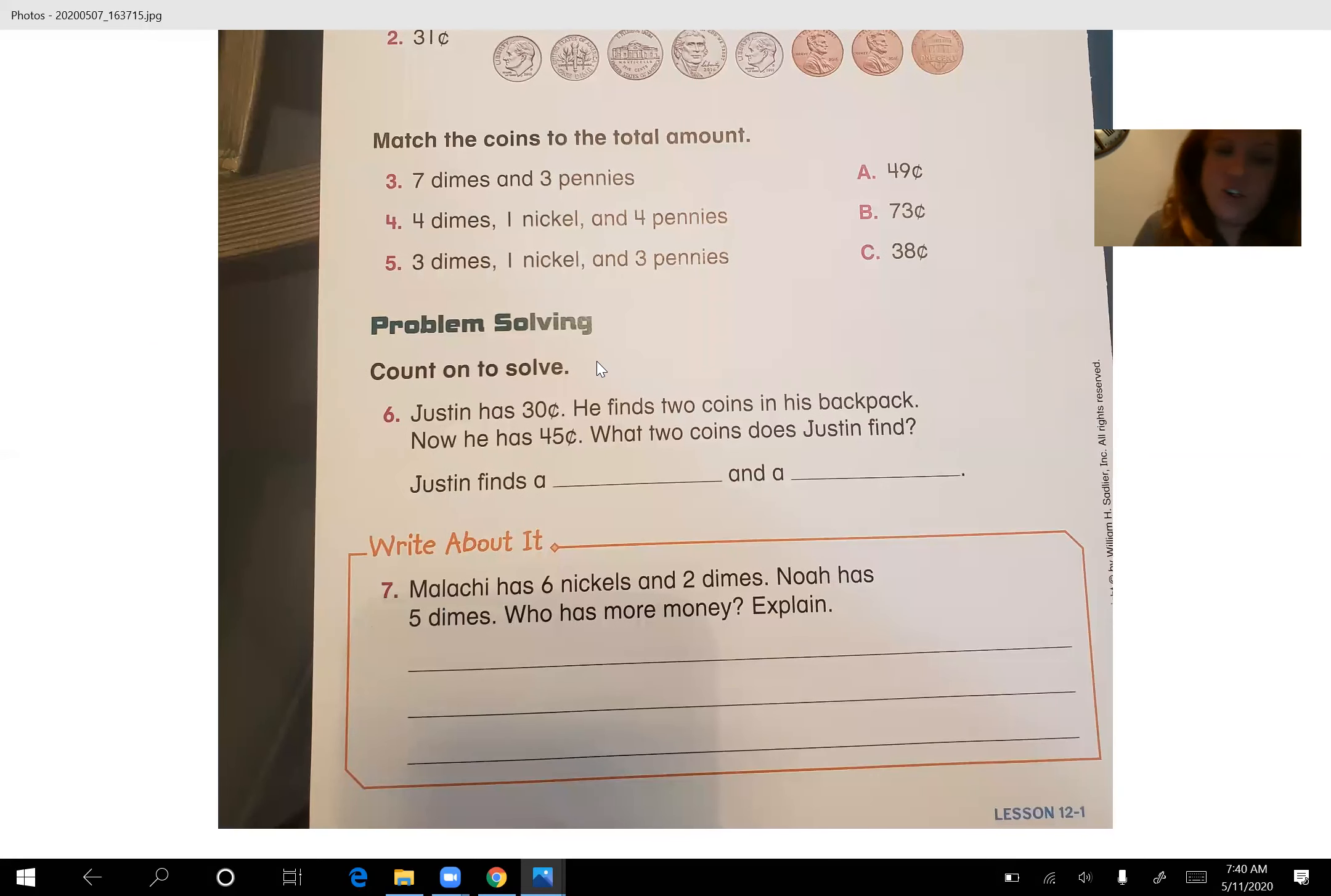Number six, Justin has 30 cents. He finds two coins in his backpack. Now he has 45 cents. What two coins does Justin find? Justin finds a blank and a blank. So what two coins does Justin find? And number seven, Malachi had six nickels and two dimes. Noah has five dimes. Who has more money? So when you're figuring this out, you might want to draw out six nickels and two dimes. How much is that? Then you want to maybe figure out how much is five dimes and then you can figure out who has more money.